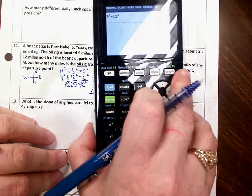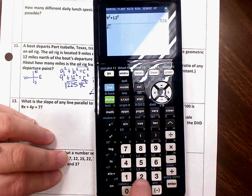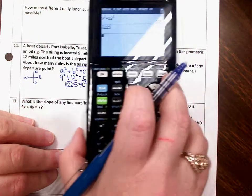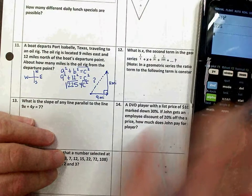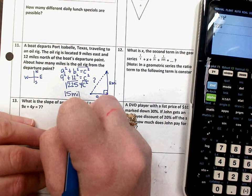So I'm going to take the square root by hitting second, X squared, of 225, and that is 15. So the two places are 15 miles apart.